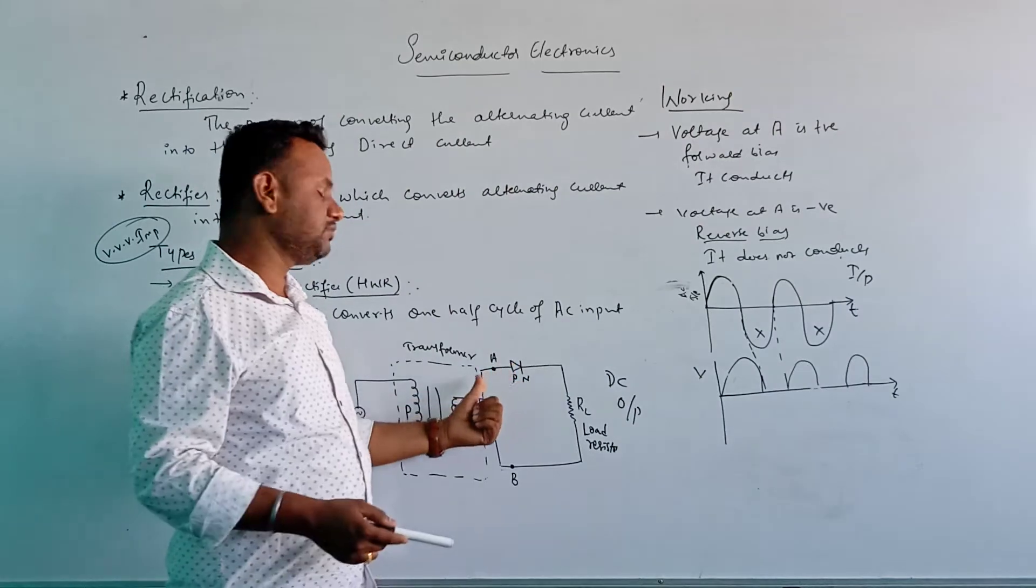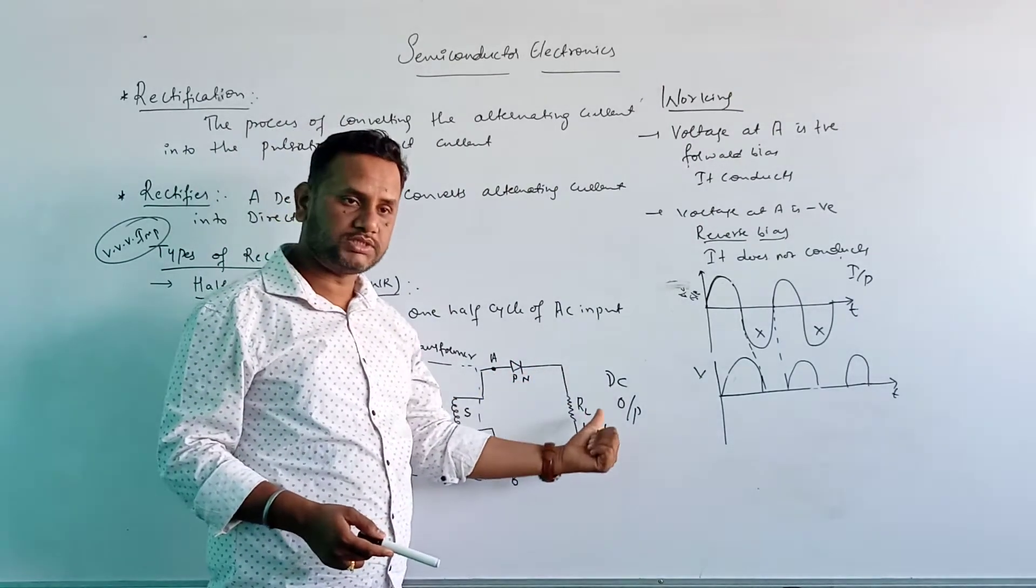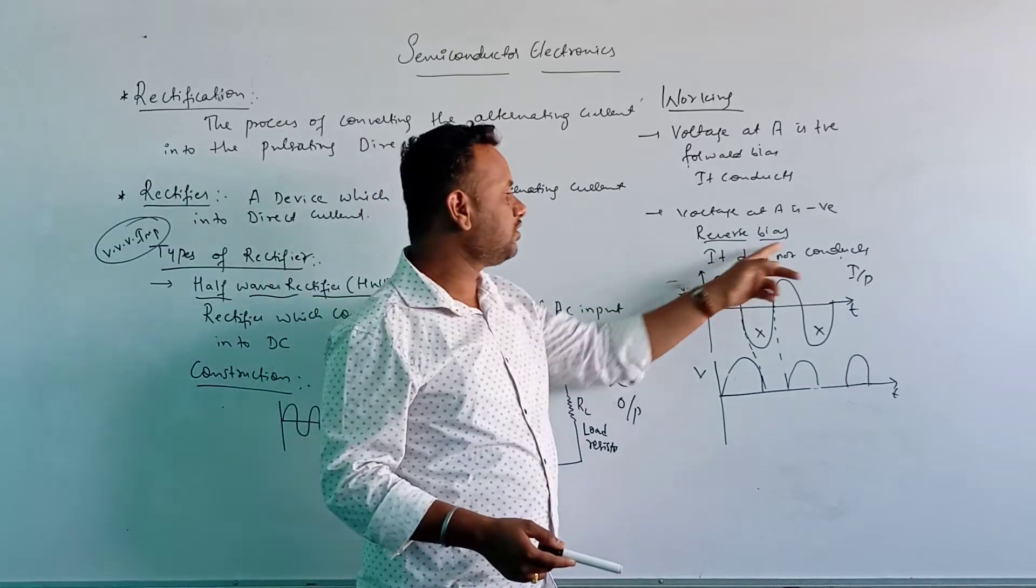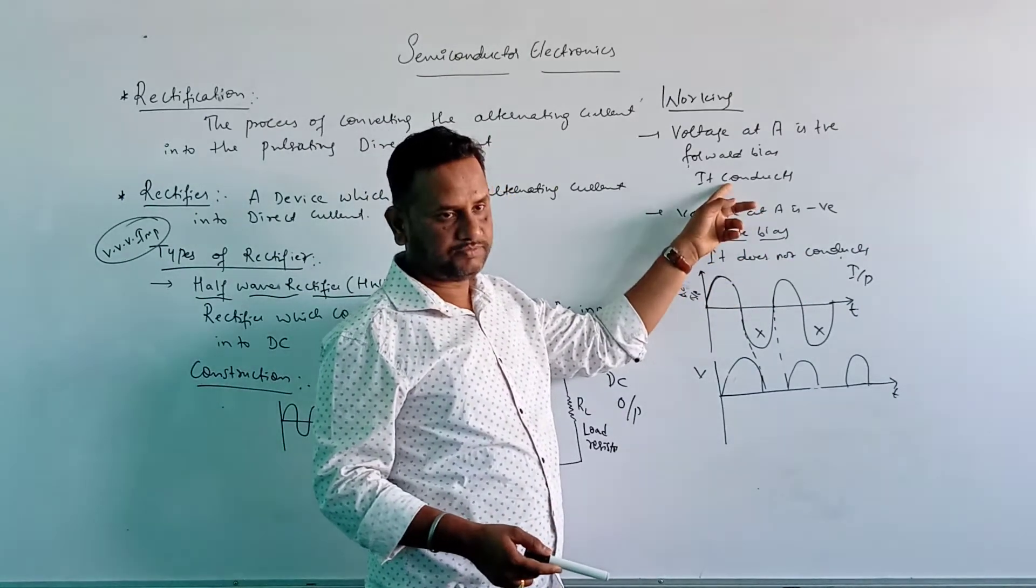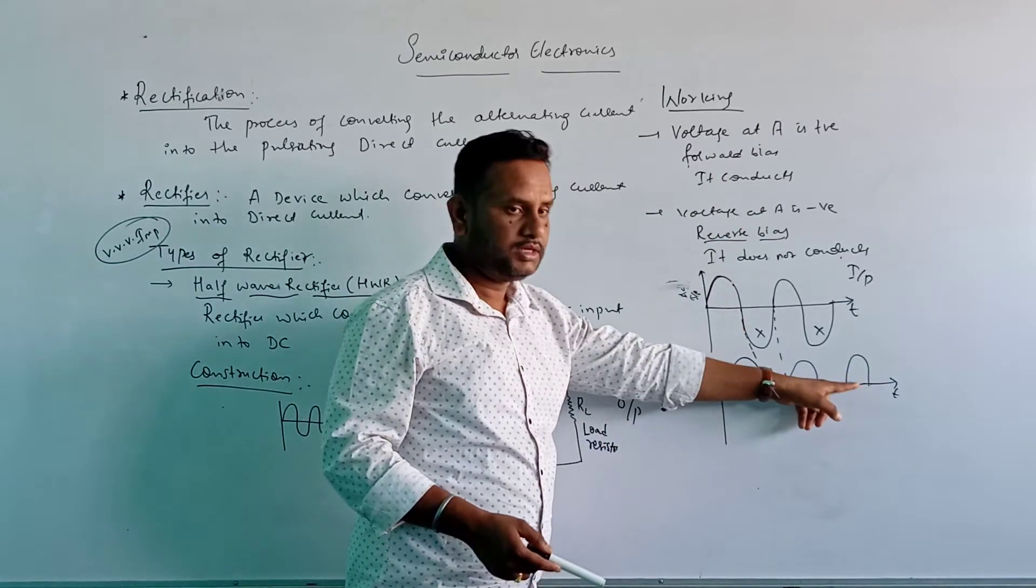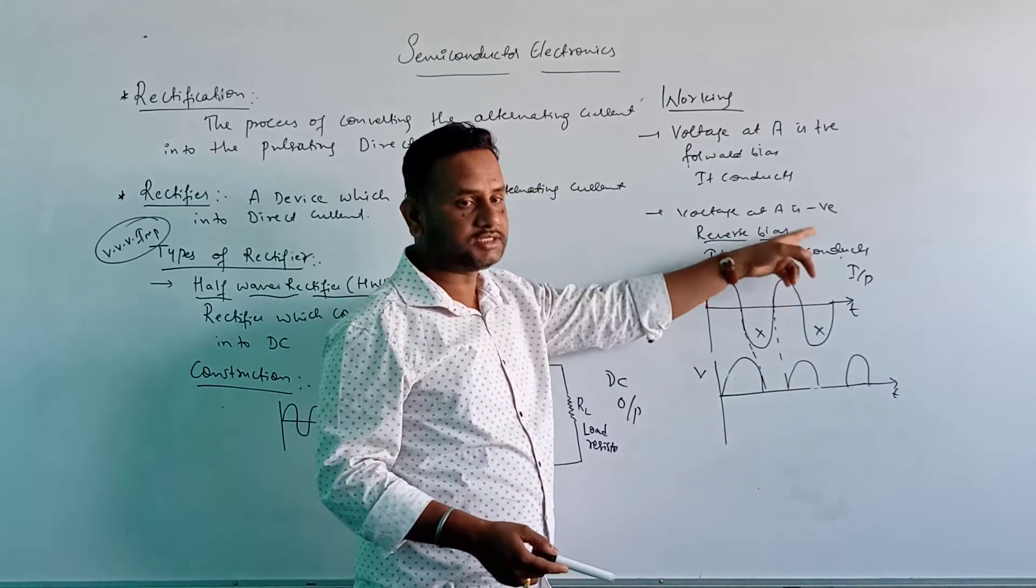Because when P region is connected to negative and N region is connected to positive, it becomes reverse bias. So this is where it does not conduct; here it conducts. So every time it is conducting, we are getting the output here. Every time when it does not conduct, we are not getting the output here.